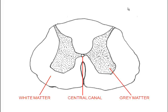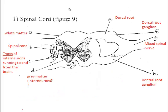The spinal cord is composed of white matter and grey matter. White matter is the outer layer. It consists of myelinated neurons, and it consists of tracts of neurons which run to and from the brain, up and down the spinal cord.